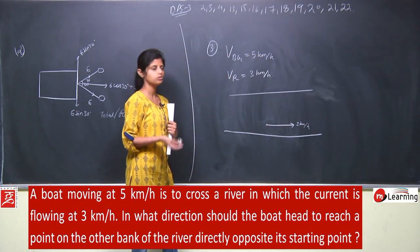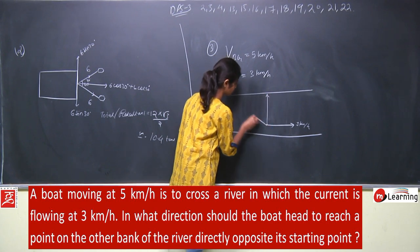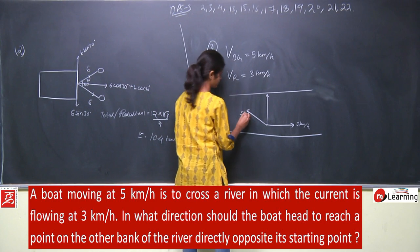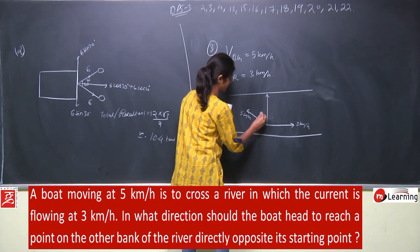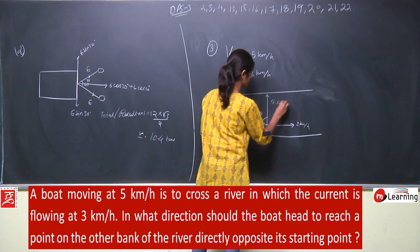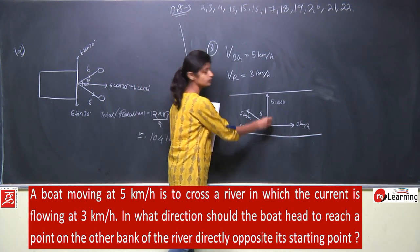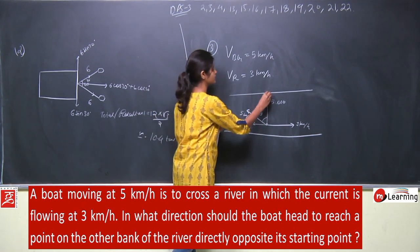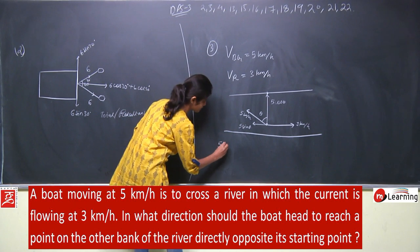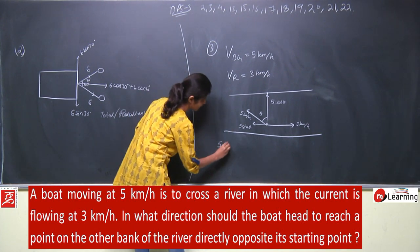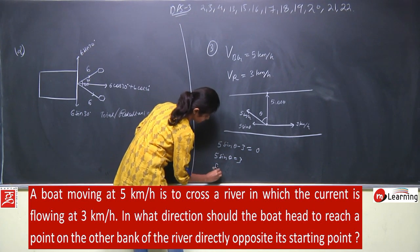In what direction should the boat head to reach a point on the other bank directly opposite its starting point? River current is in this direction with velocity 3 km/h. The boat should move so that the resultant is vertical. The boat's velocity is 5 km/h in this direction. So this is 5 cos theta and this is 5 sin theta. For the resultant to be vertical, horizontal velocity should be zero. It means 5 sin theta minus 3 should equal zero. So 5 sin theta equals 3 and sin theta equals 3 by 5.